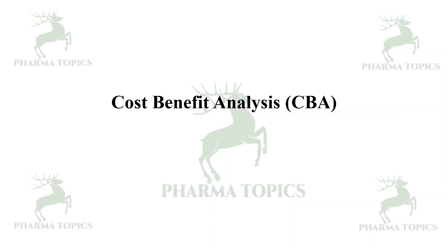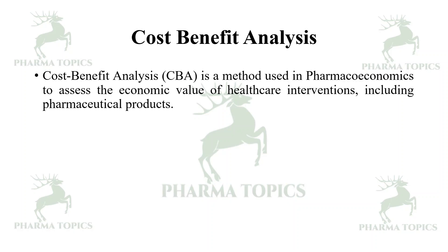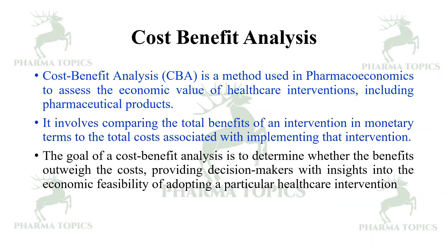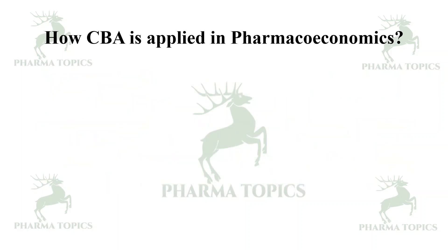There are different types of pharmacoeconomics. One is Cost-Benefit Analysis. Cost-Benefit Analysis (CBA) is a method used in pharmacoeconomics to assess the economic value of healthcare interventions including pharmaceutical products. It involves comparing the total benefits of an intervention in monetary terms to the total costs associated with implementing that intervention. The goal is to determine whether the benefits outweigh the costs, providing decision makers with insights into the economic feasibility of adopting a particular healthcare intervention.